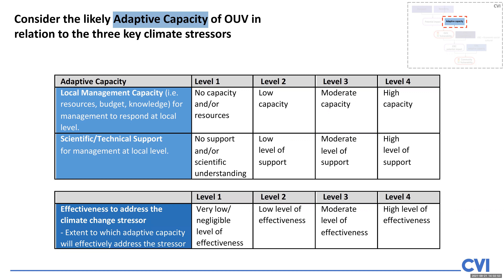There's a third aspect, and this is looking at the effectiveness to actually address the particular climate stressor. Remember, some of these stressors are very broad and have a very widespread impact. So you might have management capacity and scientific and technical knowledge, but if it's not going to effectively address the stressor, then at level one you might have a very low or negligible level of effectiveness. As you move across levels two, three, and four, the level of effectiveness increases. These are the three assessments we make for each of the three climate stressors to determine our level of adaptive capacity.